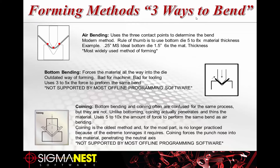Bottom bending forces the material all the way into the die. It's an outdated form of bending, still practiced and sometimes required depending on the part. It pushes the material all the way to the bottom of the die but doesn't actually reshape the material. It requires three to five times more pressure than air bending, which is why it's much rougher on the machine and tooling.